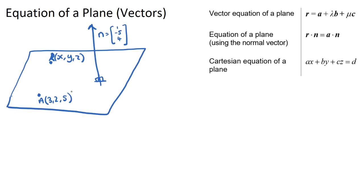If I draw a vector from A to R — from our known point to any other point on the plane — that vector is OR minus OA. The end point minus the start point gives us the vector, so going from A to R is simply r minus a: the position vector of R minus the position vector of A.